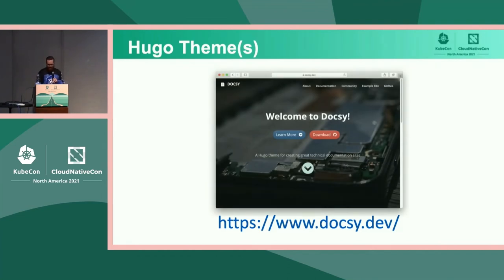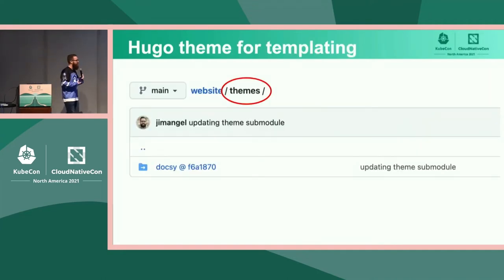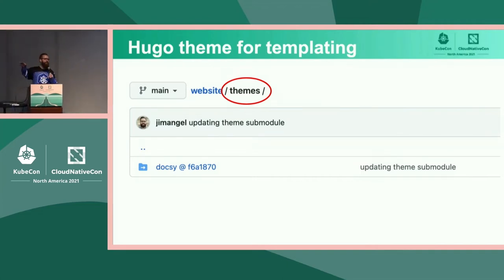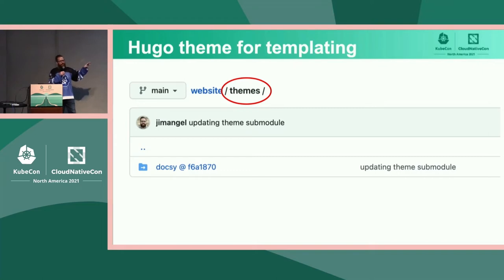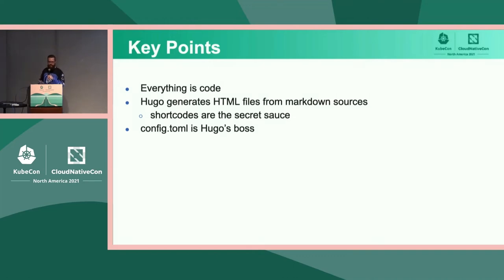We leverage a theme — Hugo's theme called Docsy. It was created by some of the tech writers at Google, and it's supposed to be the best way to present technical documentation in a very opinionated way. Demystifying what that theme is: it is a git submodule inside of the Kubernetes website folder, maintained out of band. By putting it in as a submodule, we only have to update that theme submodule as opposed to doing multiple updates to a custom-built theme. Key summary points: everything is code, Hugo generates HTML files from Markdown sources, shortcodes are the secret sauce that build various components, and config.toml is Hugo's boss — Hugo knows where to look to run successfully.